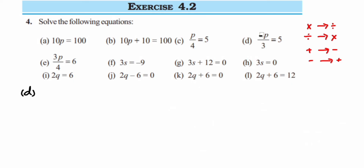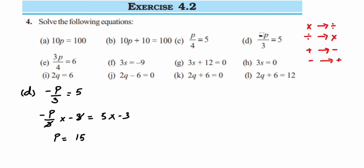Problem d: -p/3 = 5. This is similar to the previous question but with a negative sign. Since the variable p should not have a minus sign, I'm going to multiply by -3 on both sides using the balancing method. So (-p/3) × (-3) = 5 × (-3). The 3s cancel, and minus times minus becomes positive, so p becomes positive. On the right, 5 × 3 = 15, but there's one minus sign remaining, so the answer is p = -15.